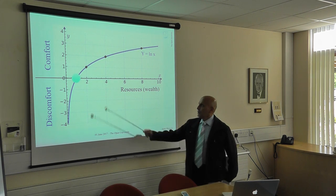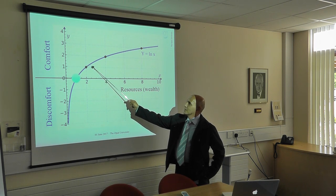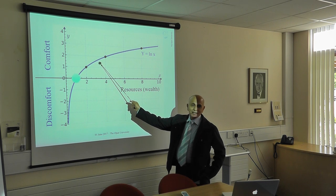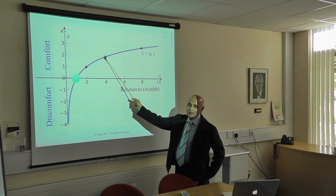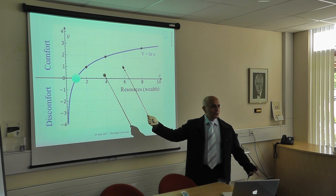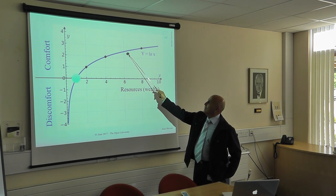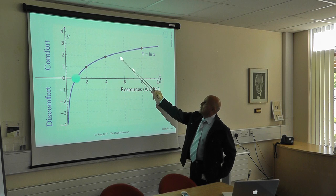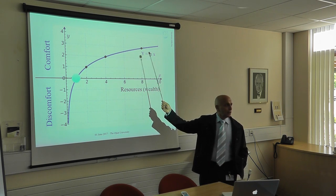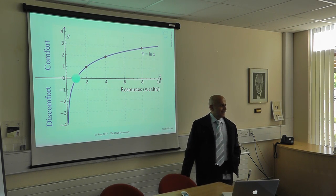If my salary increases, then I may buy a 4x4 car. I get a little richer, then I will buy a nicer car. But as I get richer and richer, maybe at this stage I will buy a Lamborghini. For me, as you see, it is increasing.